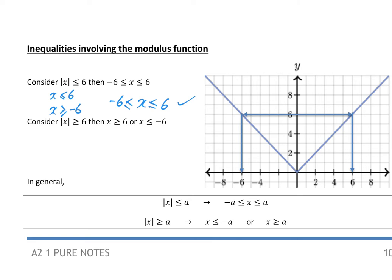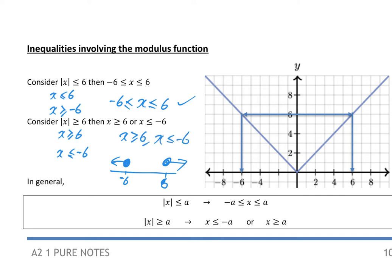For the second one, modulus of x is greater than or equal to 6: the positive version gives x is greater than or equal to 6, and the negative version gives x is less than or equal to minus 6. Those unfortunately can't be put together. On a number line, the first inequality covers minus 6 to 6 as one connected region, but this one goes out to the left from minus 6 and out to the right from plus 6 — two separate regions. So you write: x is greater than or equal to 6, or x is less than or equal to minus 6.